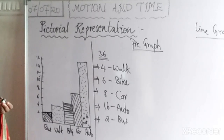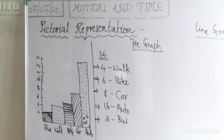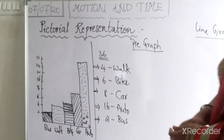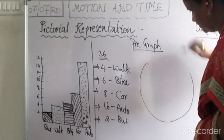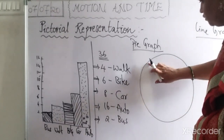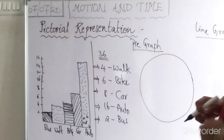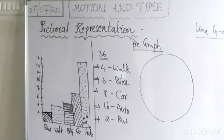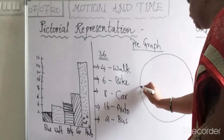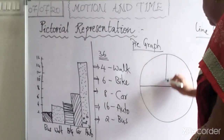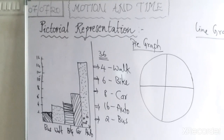Now let us go to the pie graph. In the pie graph, we draw a circle on the board since we cannot draw a 3D shape. The total angle in a circle is 360 degrees, and we are considering each degree as representing one student. Let us divide the circle into four parts — each part will show 9 students, and 4 parts together shows all 36 students.